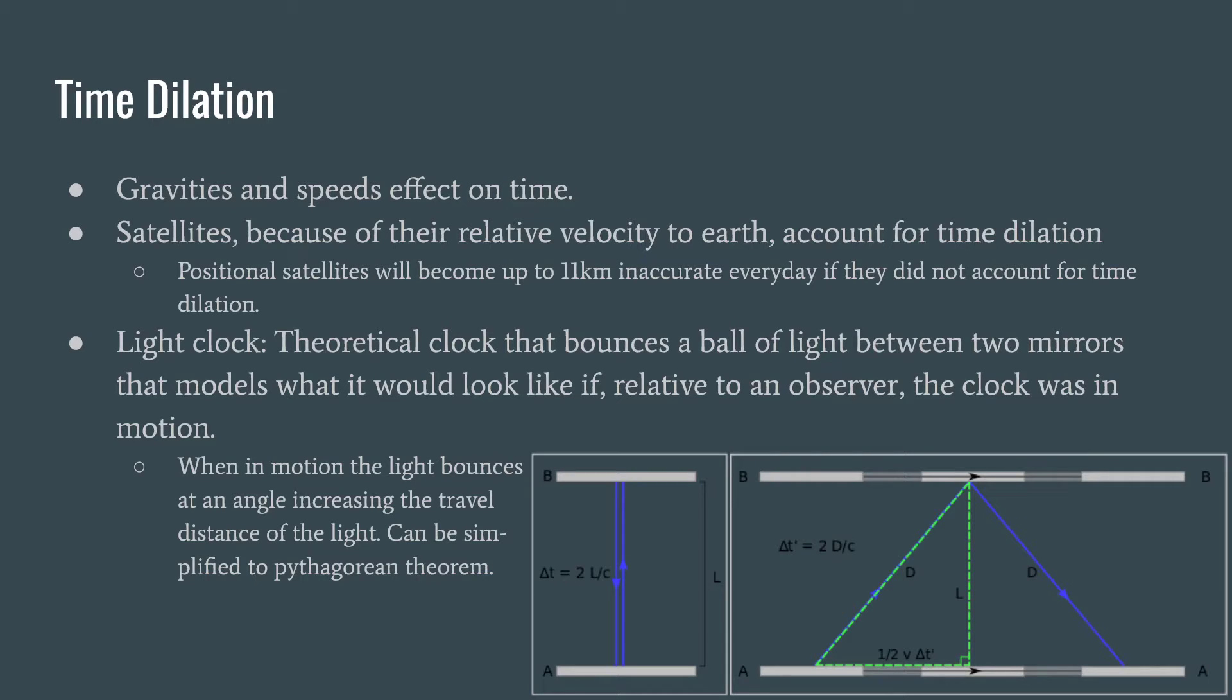Scott Kelly, when he was up in space for a year, came back to earth five milliseconds younger than his twin. Like it's a very marginal, it's not seven years, but because he's so close to earth, the time dilation was less.